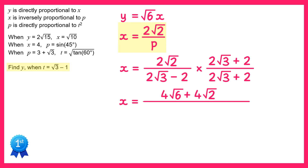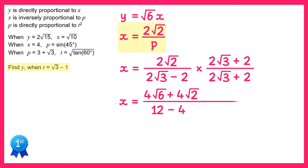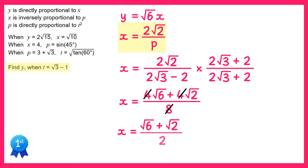On the bottom we're expanding a double bracket: 2 root 3 times 2 root 3 gives 4 times 3, which is 12. Then 2 root 3 times 2 is 4 root 3, negative 2 times 2 root 3 is negative 4 root 3, and negative 2 times 2 is negative 4. The 4 root 3 terms cancel, leaving 12 minus 4, which is 8. There's a common factor of 4 to cancel out, leaving x equals (root 6 plus root 2) over 2.